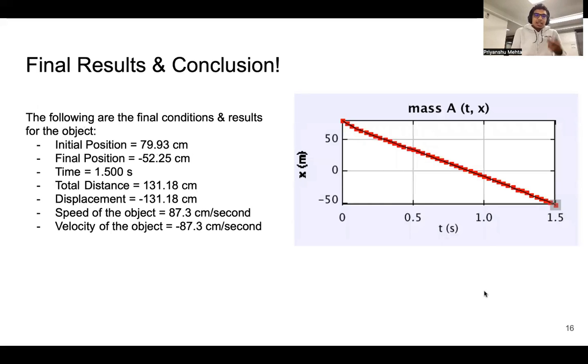These are the final results. The initial position was 79.93 centimeters and the final position was minus 52.25 centimeters. The time was 1.5 seconds. And using the velocity equals displacement by time formula, we get the velocity is negative 87.3 centimeters per second.